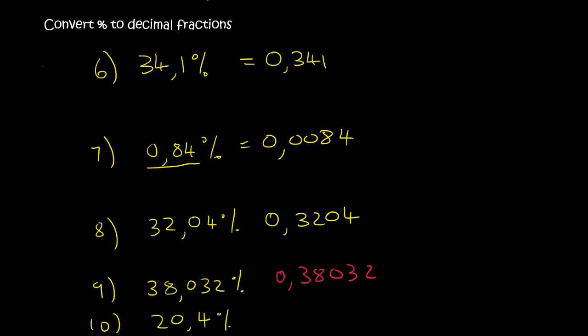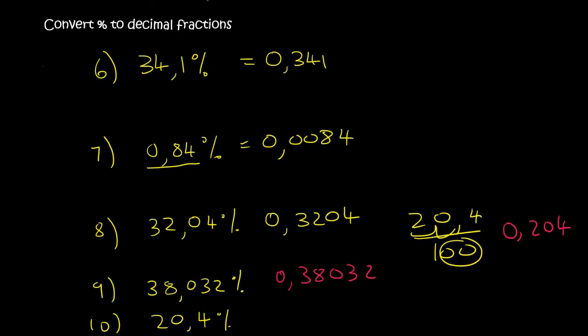The last one for this lesson is 20.4%. So 20.4 over 100 — that's the first step. Two decimal places, so move it two places back. And so you end up with comma 204. Because it's empty in the front, add a 0. There we go, guys — that is how you convert a percentage to a decimal.